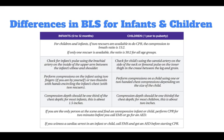There are some differences in BLS for infants and children. For children and infants, if two rescuers are available to do CPR, the compression to breath ratio is 15 to 2. If only one rescuer is available, the ratio is 30 to 2 for all age groups. For infants, which are 0 to 12 months, check for the infant's pulse using the brachial artery on the inside of the upper arm between the infant's elbow and shoulder. Perform compressions using two fingers if you're by yourself, or two thumbs with hands encircling the infant's chest when there are two rescuers. Compression depth should be one-third the chest — for infants, this is about 1.5 inches.